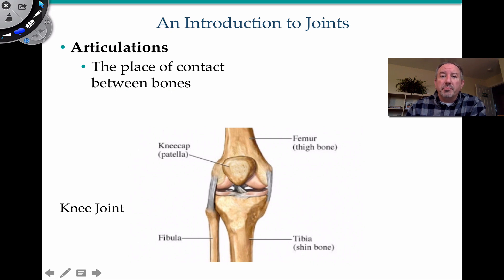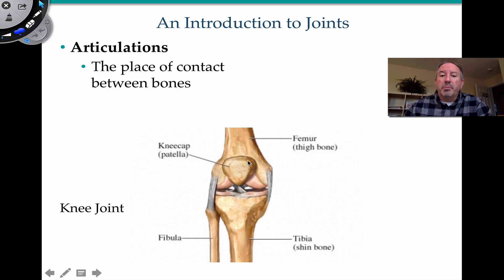Let me define a few things that you may be aware of, like the concept of articulation. Usually when you think of articulation, you think of a person who comes to the point, or they're very articulate. Well, this is where two bones come together, or come to a point, or a junction. It's a place in which bones come into contact, and those are called articulations. You can see here in the classic joint of the knee, where the femur, or thigh bone, articulates with the tibia and fibula. And then here's the kneecap or patella. So a joint is where bones come together.